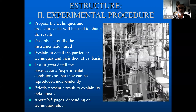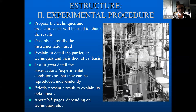Then we go to the experimental procedure, where you propose the techniques and procedures used to obtain the results. You need to describe carefully the instrumentation used, because one of the main aspects of your science should be that it can be reproduced by anyone. Give all details about the particular techniques and theoretical basis of what you are doing. List in detail the observational and experimental conditions so they can be reproduced independently by others, and briefly present the method used to explain the results obtained. This experimental procedure section should be brief — a few pages, two to five pages, depending on the complexity of the techniques.